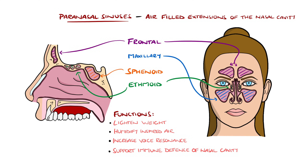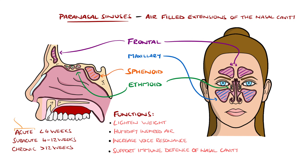Acute rhinosinusitis is the term used for cases with a duration under 4 weeks, subacute if 4 to 12 weeks, and chronic if 12 weeks or more. It's estimated that adults have 1 to 3 episodes of acute viral sinusitis annually, and roughly 10% of the adult populations in the UK and US are affected by chronic sinusitis.